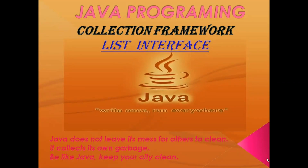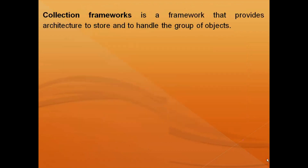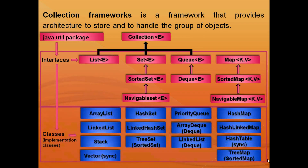Hello friends, welcome to my next video tutorial on Java for beginners. In this video, I am going to start discussion about the list interface. As I told in my last video, collection framework is a framework that provides architecture to store and handle the group of objects. It has interfaces and its implementation classes plus some algorithms. Let's start discussion about collection framework interfaces — first, we will discuss about what is list interface.